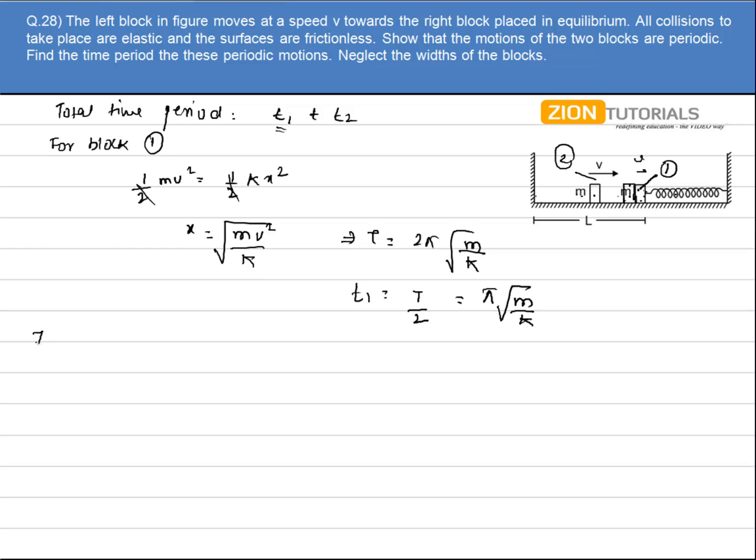Now let us talk about block 2. The total time it will take to cover the distance 2L can be easily calculated by distance upon velocity, that is 2L by v.